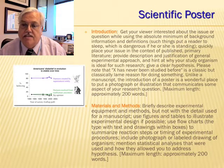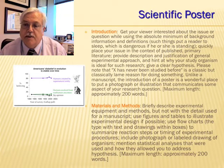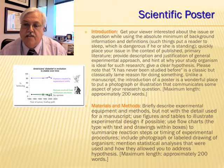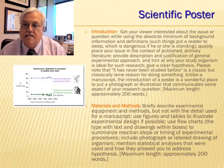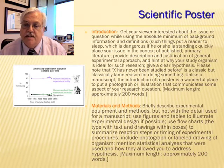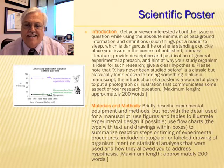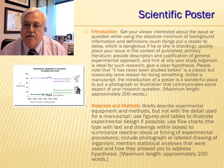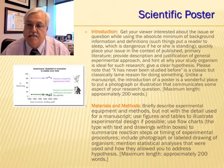Then move on to the materials and methods section. Briefly describe experimental equipment and methods, but not with the detail used for a manuscript. Use figures and tables to illustrate experimental design if possible. Use flowcharts — with text and drawings within boxes — to summarize reaction steps or timing of experimental procedures. Include photographs or labeled drawings of the organism or idea, and mention statistical analyses that were used and how they allowed you to address the hypothesis. Maximum length is about 200 words.